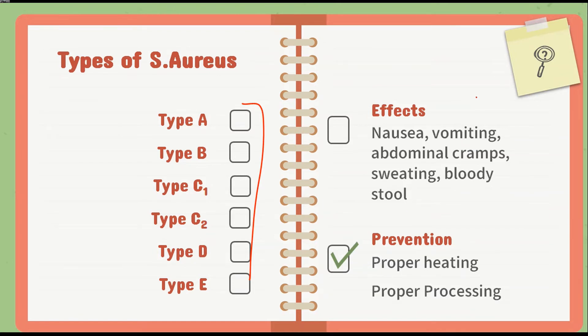Prevention includes proper heating and proper processing of food products, since most bacteria are inactivated and killed at high temperatures. Proper heating, proper processing, and proper packaging are all essential.